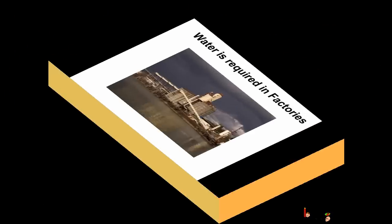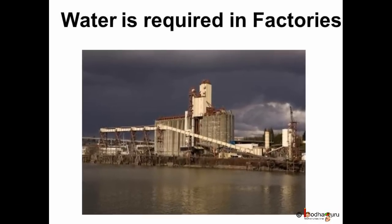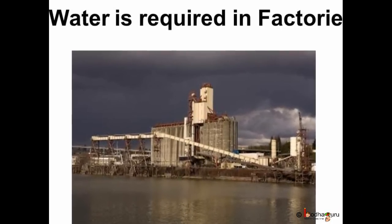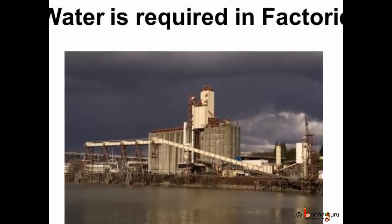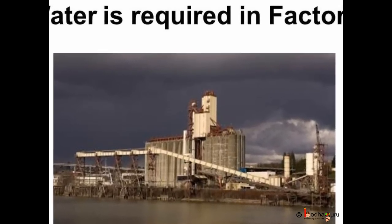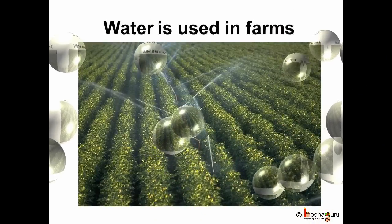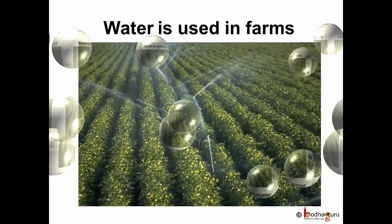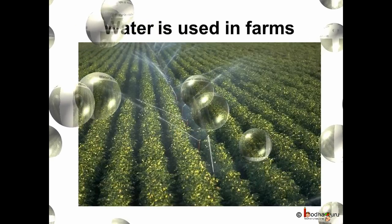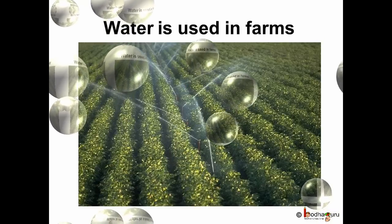Other than home, where all is water required? Water is required in the factories for washing material, cleaning equipment and cooling huge machines. Water is also used in agriculture to grow healthy crops. Taking water from the water bodies to the land where crops are grown is called irrigation.